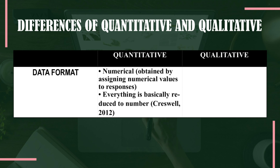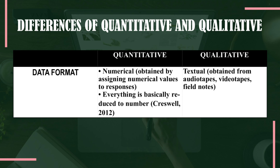Pressing ahead, we have data format. Quantitative research uses numerical data, while qualitative research uses textual data — which is probably the most popular difference between the two. The data from quantitative research is obtained by assigning numerical values to responses. While in qualitative research, the words, texts, or sharings of participants are obtained from audiotapes, videotapes, and field notes.